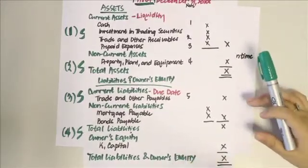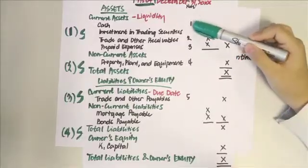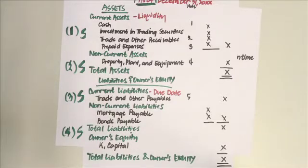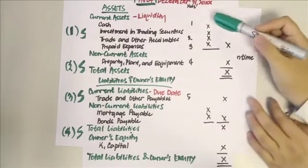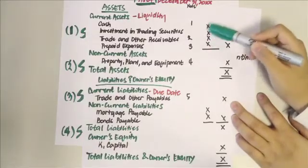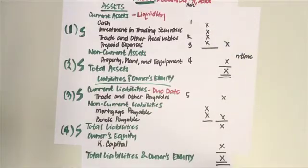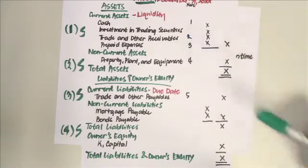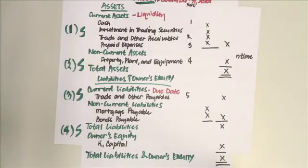Notice that there are numbers beside the account titles — these reference the notes to financial statements, which provide details about the components of each account and how the balances are computed. For example, under trade and other receivables, the notes would show components like accounts receivable and notes receivable.